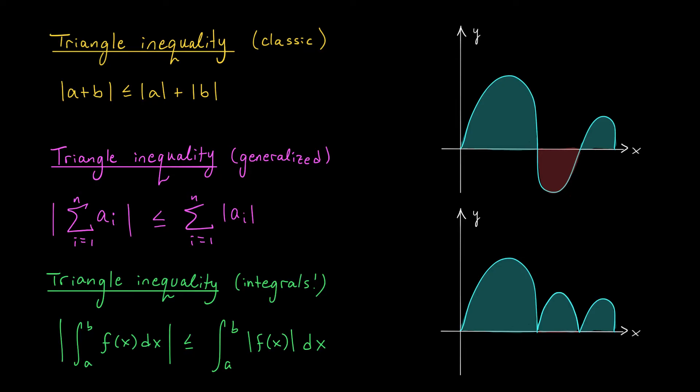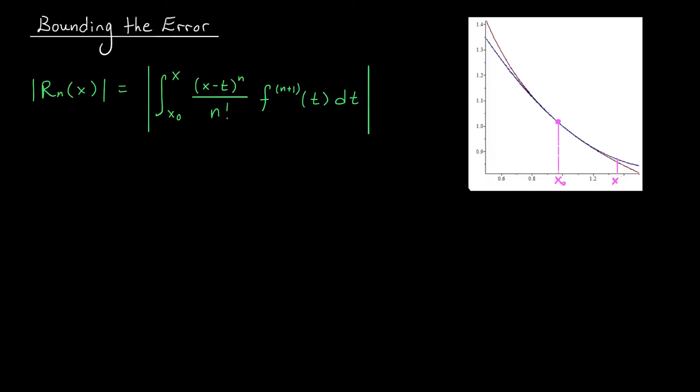If instead, though, you compute the expression on the right, well, you take the absolute value of the function first. So this negative area would flip up and become positive. When you take the integral and add up these areas, you don't get any cancellation. This expression is the bigger one.